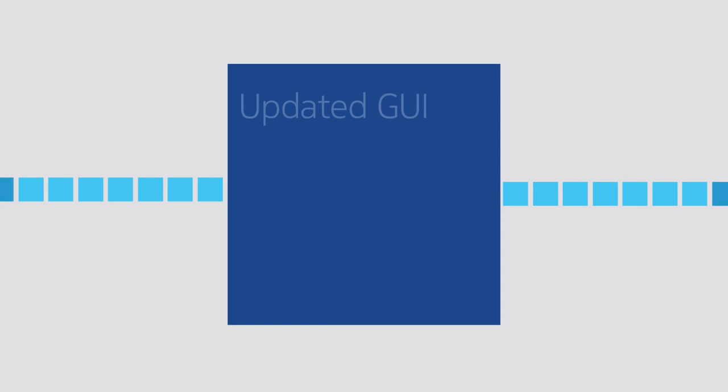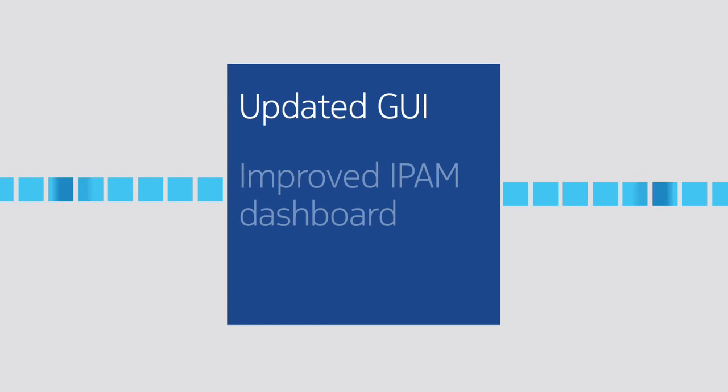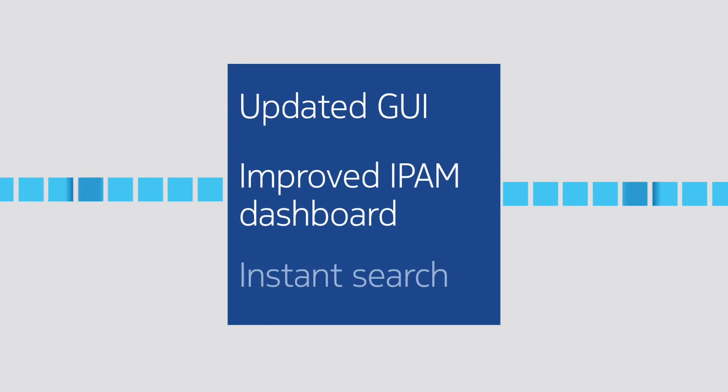The instant search capability allows administrators to quickly jump to IP objects at any time. Tables are optimized to display more information, with in-table filtering to find what network operators need.